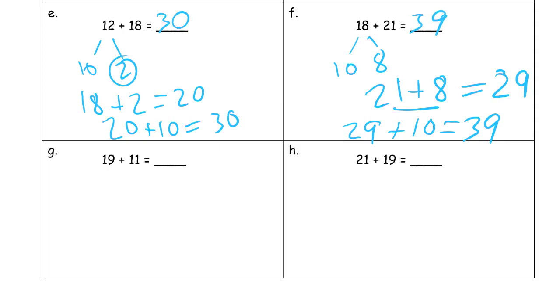And 19 plus 11. That's 10 and 1. 19 plus 1 is 20. And 20 plus 10 is 30. So, you may notice if you go back over this page, there's a lot of examples where the 1s digits add up to a 10.